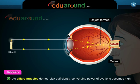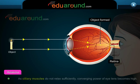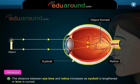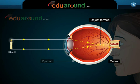As ciliary muscles do not relax sufficiently, the converging power of the eye lens becomes high. Also, the distance between the eye lens and retina increases as the eyeball is lengthened or the lens is curved.